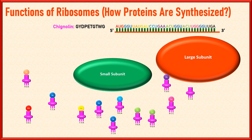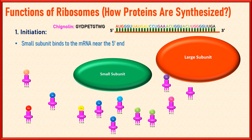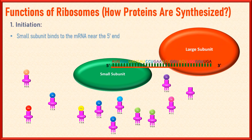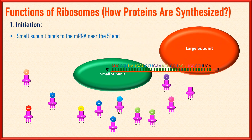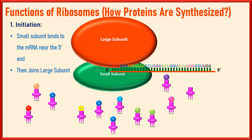The first step of translation is initiation. The small ribosomal subunit binds to the messenger RNA near the 5' end, where a specific nucleotide sequence called the start codon is located. The start codon codes for the amino acid methionine, which serves as the initiator for protein synthesis. When the small subunit is attached to messenger RNA, it's time for the large subunit to join the complex, creating a functional, activated ribosome. This is the end of initiation.